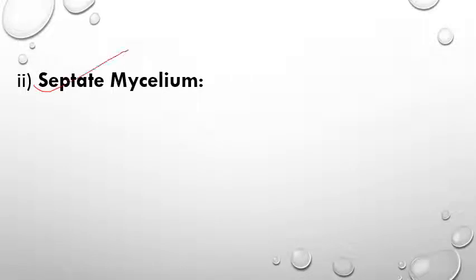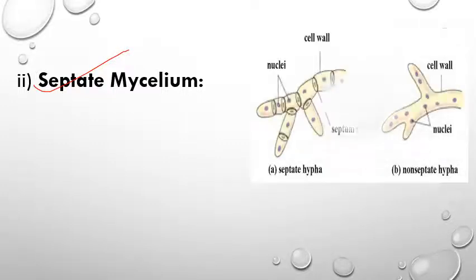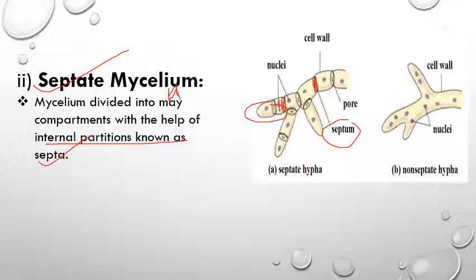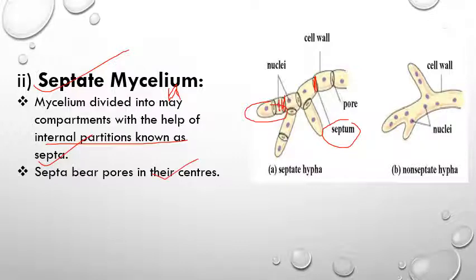The next type is septate mycelium. As the name indicates, it consists of compartments. In the picture we can see many compartments divided by internal partitions known as septa — 'septum' is singular and 'septa' is plural. The septa bear pores at their center, and the function of these pores is the exchange of material between adjacent cells.